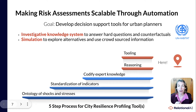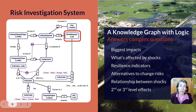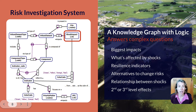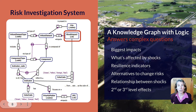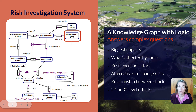Here are two sneak peeks of the tools jointly being developed. The first is a risk investigation system, all about modeling shocks on cities. The goal is to use this knowledge graph with logic to answer complex questions like: what are the highest risks? What causes the most impact? Which elements and components of the city are affected by something like a flood? Then look at indicators — representing how resilient a component is, such as a water pipe or a dam — and ask what alternatives might change the risk, what the counterfactual is, what relationships exist between shocks themselves, whether shocks chain into one another, and what the second and third level ripple effects are.